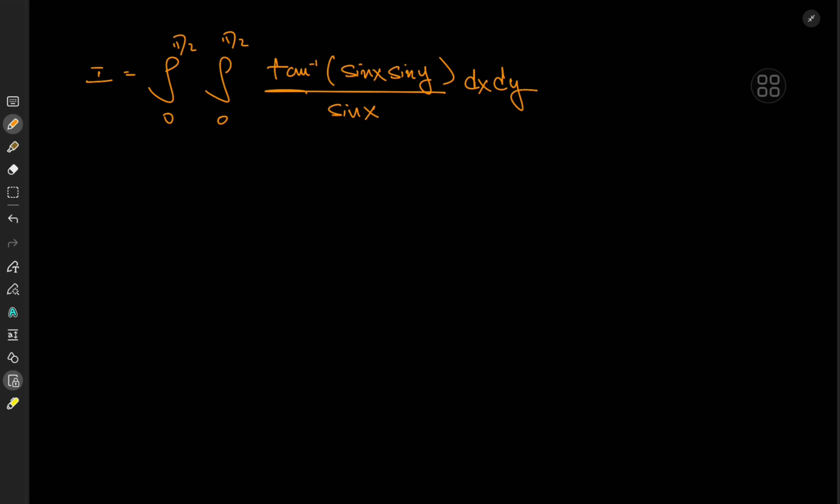So, what do we have here? We have the double integral from 0 to pi over 2 of arctangent of sine x times sine y over sine x, dx dy. Which is quite strange, so it would pay off to use a strange-looking strategy to actually begin the solution development.